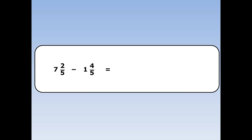7 and 2 fifths take away 1 and 4 fifths. The first thing I notice is that 4 fifths is bigger than 2 fifths, so if I try and take them away, I'll end up with a negative number, so I need to borrow from the whole numbers.